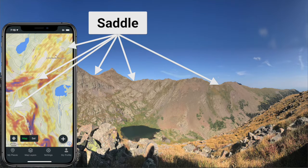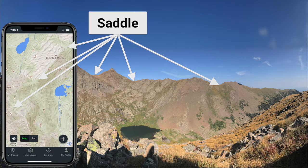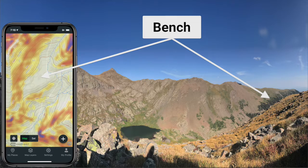A saddle, also referred to as a pass, is a low point along a ridgeline. Many animal paths and human trails and roads take advantage of a saddle to cross over a ridge. Why would you hike up to a higher point to traverse a ridge when you can just shoot across the saddle? A saddle can be identified on the map as two ridge lines come together at a low point, seen as the bends of V or U shaped topo lines from the two ridges approaching each other.